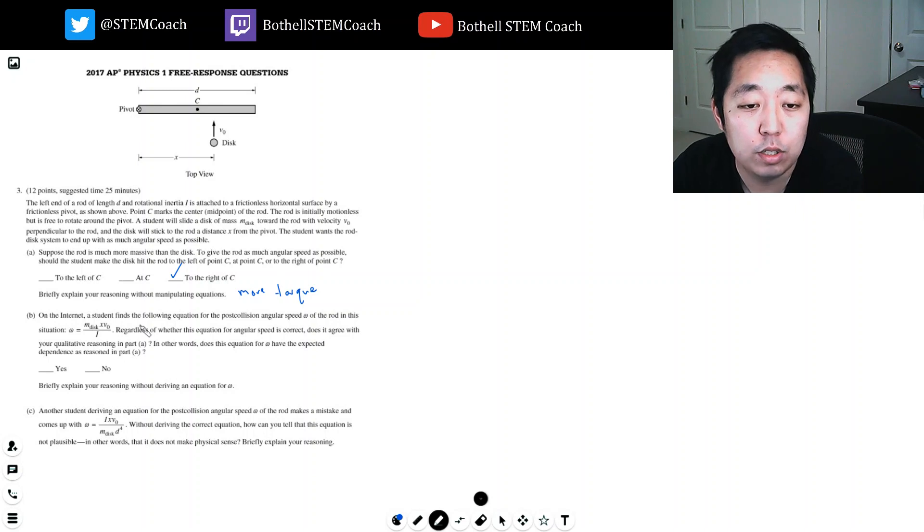On the internet, a student finds the following equation for the post-collision angular speed omega of the rod. Regardless of whether the equation for angular speed is correct, does it agree with your qualitative reasoning in part A? In other words, does this equation for omega have the expected dependence?